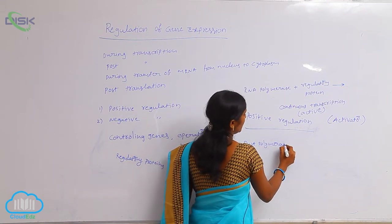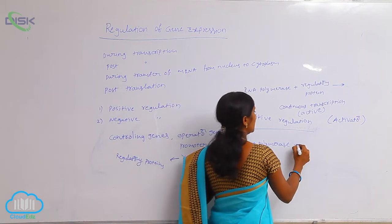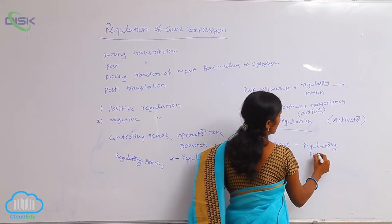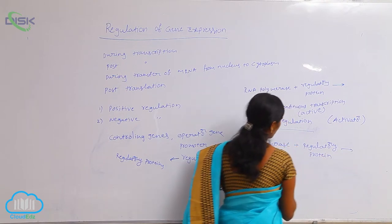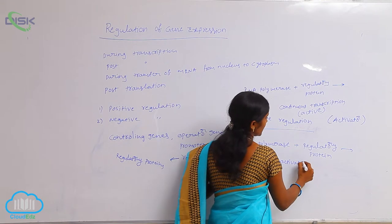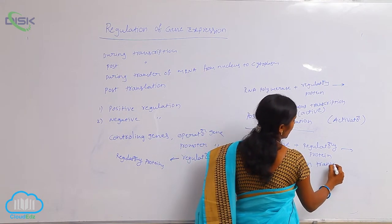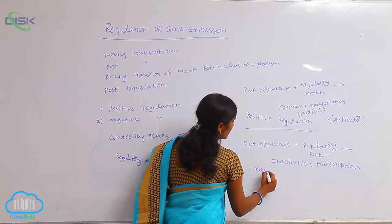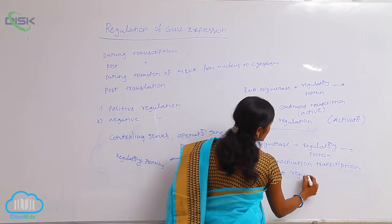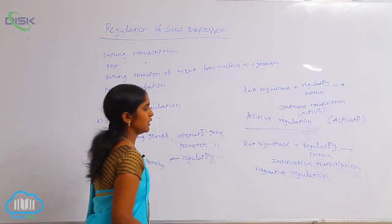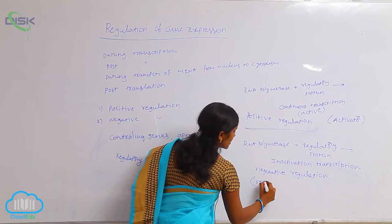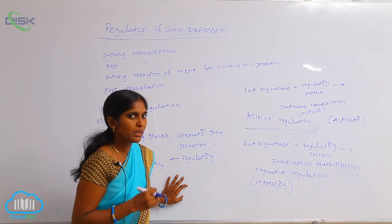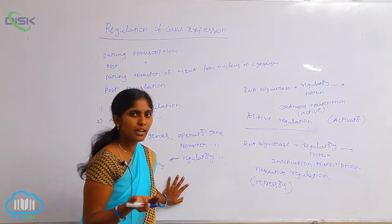In negative regulation, RNA polymerase binds to the promoter region, but the regulatory protein binds to the operator site, causing inactivation of transcription. This gives a negative result. Such regulation is called negative regulation. The regulatory proteins involved in negative regulation are called repressors. So, there are two types of proteins: activators and repressors.